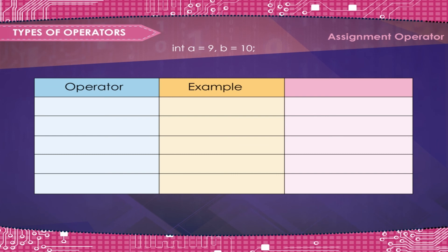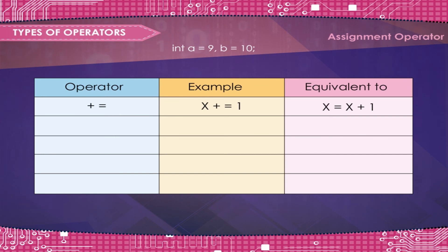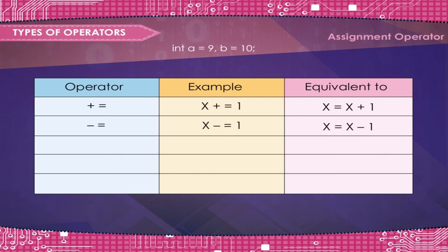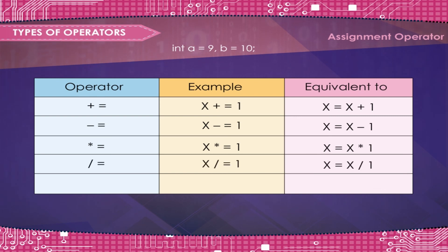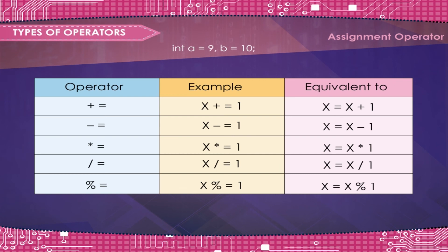For example, int A is equal to 9, B is equal to 10. Operator, example, equivalent to: Plus equals (+=): X += 1 is equivalent to X = X + 1. Minus equals (-=): X -= 1 is equivalent to X = X - 1. Asterisk equals (*=): X *= 1 is equivalent to X = X multiplied by 1. Slash equals (/=): X /= 1 is equivalent to X = X divided by 1. Percentage equals (%=): X %= 1 is equivalent to X = X remainder 1.